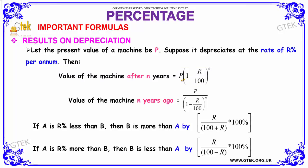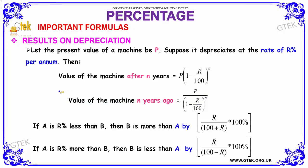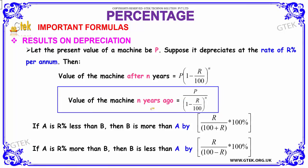Where P is the present value of the machine, r is the rate of depreciation per annum, and n is the number of years. To calculate the value of the machine n years ago, the formula is: P by (1 minus r by hundred) the whole power n, where P is the present value and r is the rate of increase or decrease per annum.